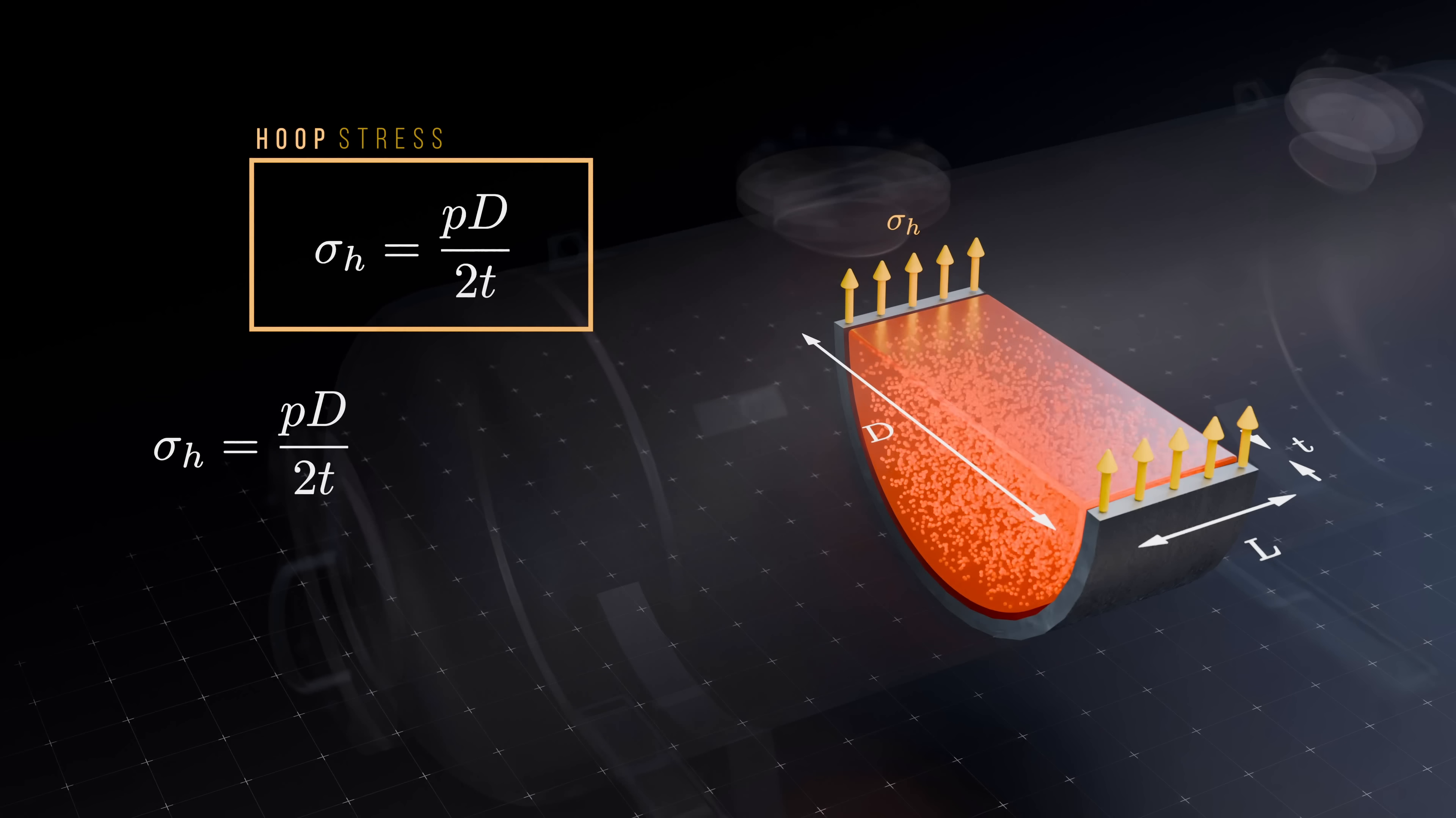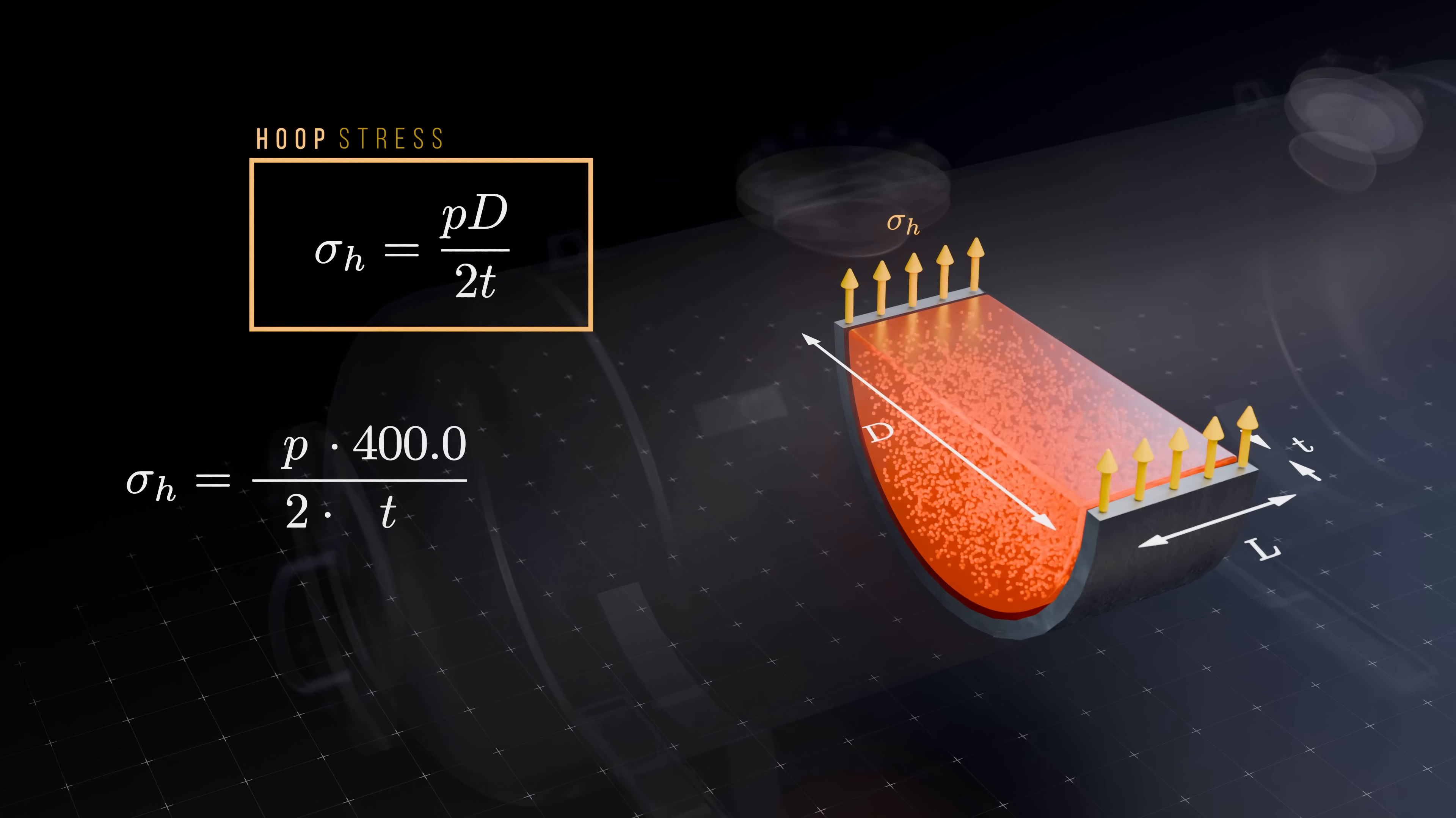A pressure vessel with a diameter of 400 mm, for example, that has a wall thickness of 10 mm at an internal pressure of 50 bar, which is 5 MPa, will develop a 100 MPa hoop stress in its walls. Reducing the pressure, reducing the vessel diameter, or increasing the wall thickness all result in a lower hoop stress.